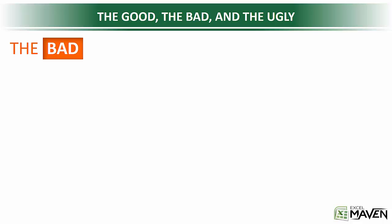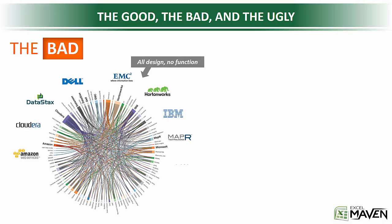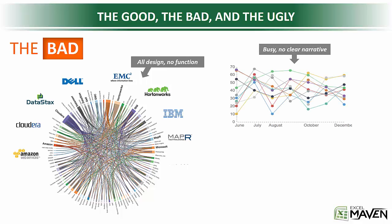Which brings us to the bad. First case, we have a really busy, really cluttered radial chart. This is one of those cases where it seems to be really heavy on design and really light on function, meaning I might print it out because it looks nice, but I really don't know what sort of insight I'm supposed to derive from this. Second, we've got a line chart with just way too many data series. There's no legend, there's no clear narrative. I don't even know where to start with this one.